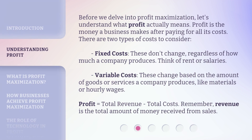Before we delve into profit maximization, let's understand what profit actually means. Profit is the money a business makes after paying for all its costs. There are two types of costs to consider. Fixed costs: these don't change regardless of how much a company produces — think of rent or salaries. Variable costs: these change based on the amount of goods or services a company produces, like materials or hourly wages. Profit equals total revenue minus total costs. Remember, revenue is the total amount of money received from sales.